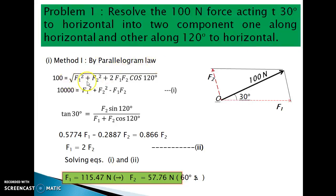Method 1: By parallelogram law. 100 equals square root of F1 squared plus F2 squared plus 2F1F2 cos 120 degrees. This gives 10000 equals F1 squared plus F2 squared minus F1F2. Tan 30 degrees equals F2 sin 120 degrees divided by F1 plus F2 cos 120 degrees. This gives 0.5774F1 minus 0.2887F2 equals 0.866F2.